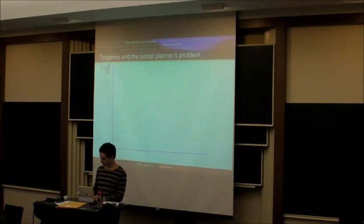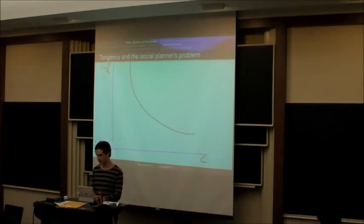These are 1 minus L, and here is the number of coconuts that they eat. They're going to have some indifference curve that looks like a Cobb-Douglas indifference curve. Then what is the firm going to do?